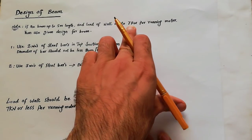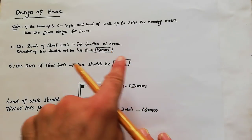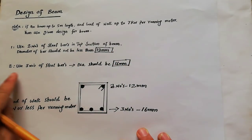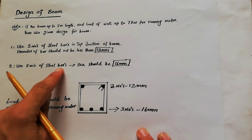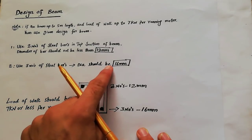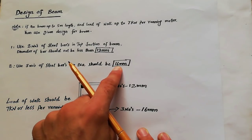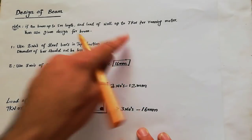Then you can use this. Otherwise, use three numbers of steel bars - the dia should be 16 mm. If the load is this or less, use three numbers of steel bars, the dia should be 16 mm.